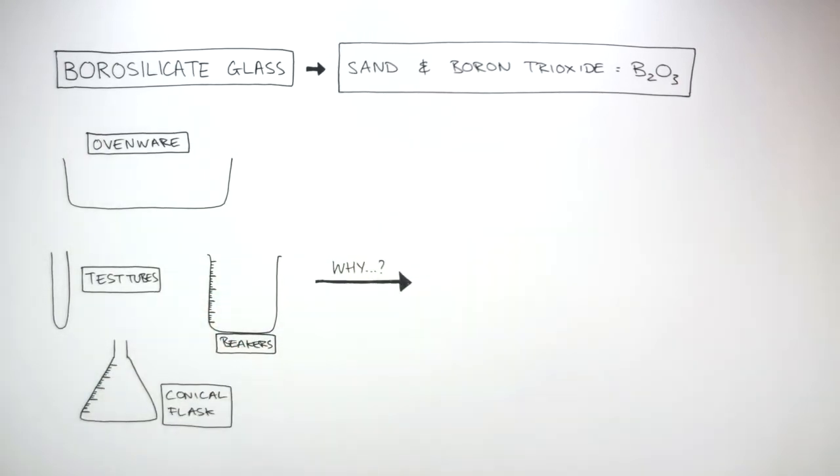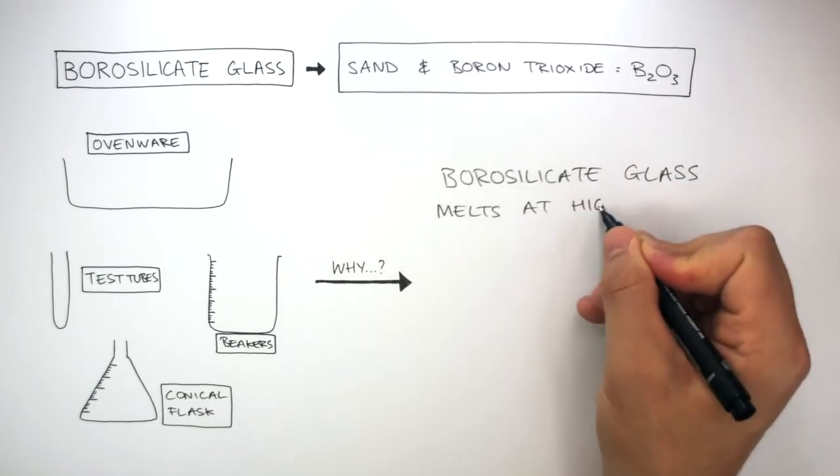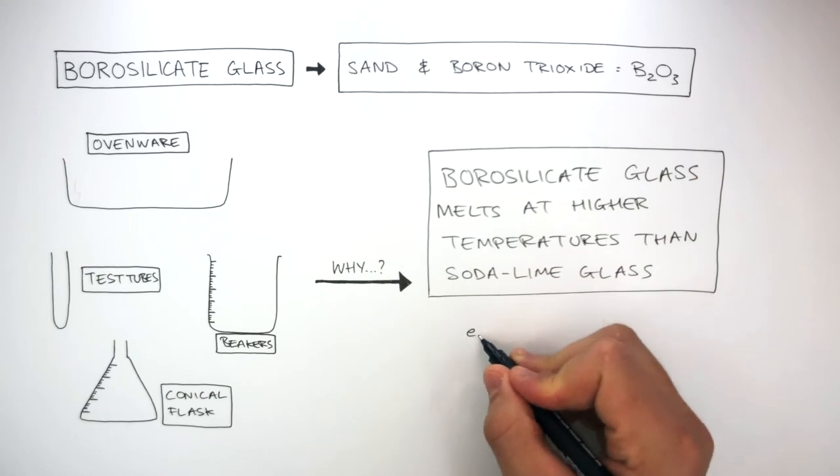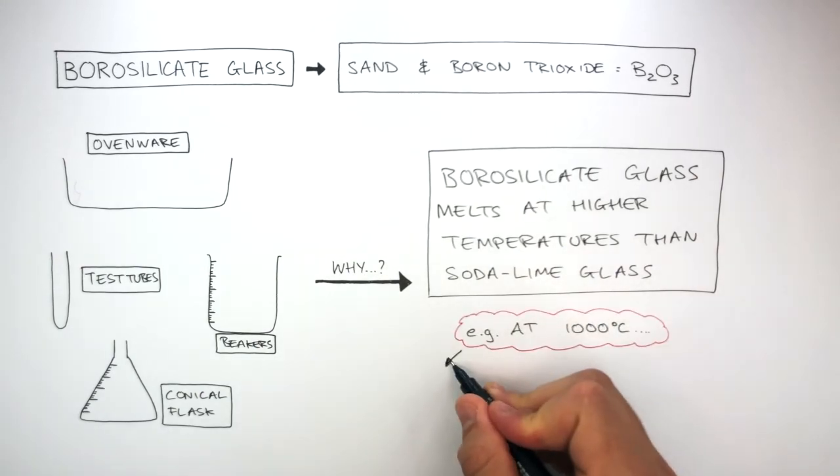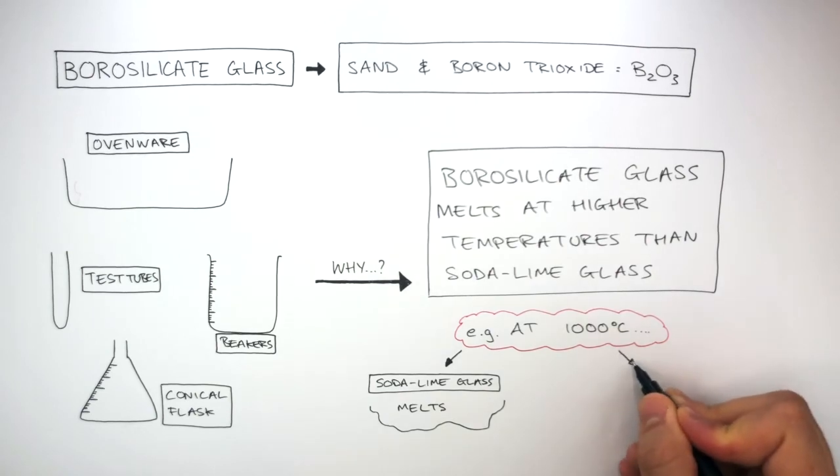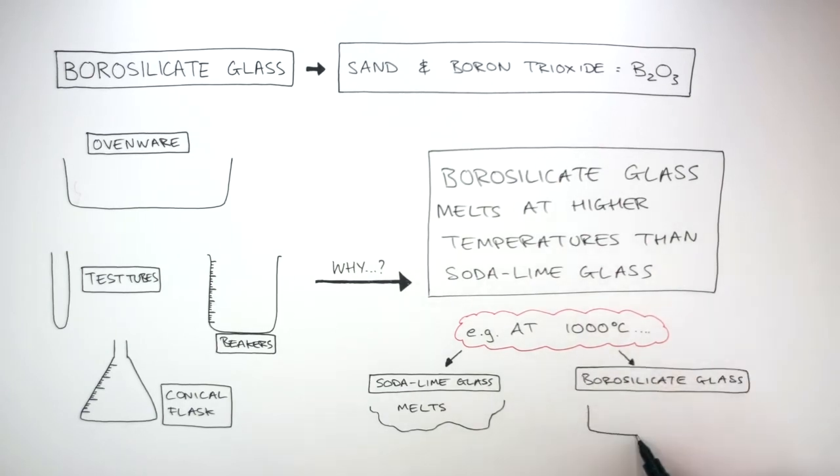Why? Because borosilicate glass melts at higher temperatures than soda-lime glass. For example, at 1000 degrees Celsius, soda-lime glass, if heated to this temperature, melts. Soda-lime glass melts at 1000 degrees Celsius, whereas borosilicate glass does not melt at this temperature. So borosilicate glass can be used at high temperatures.